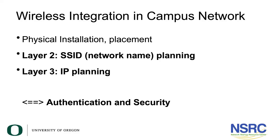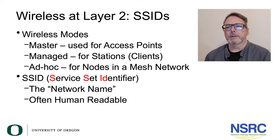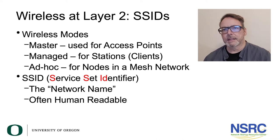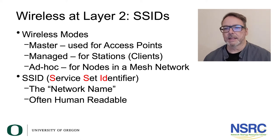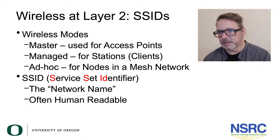Let us come to the integration of wireless into the campus networking. There are two main design questions: one is Layer 2 — the SSID, the network name planning — and secondly, Layer 3 — the IP planning. After that we'll also be talking about authentication and security.